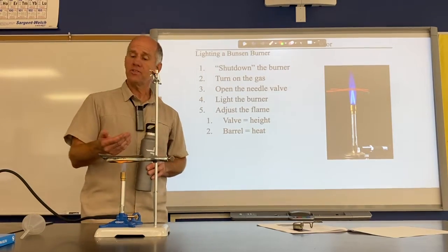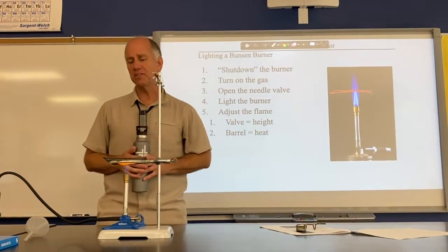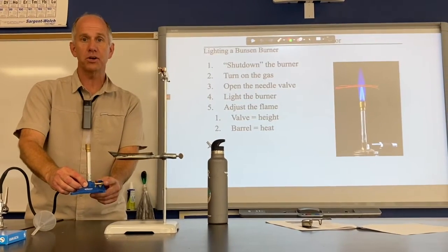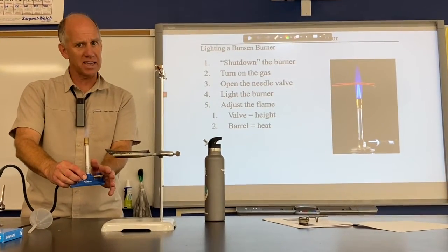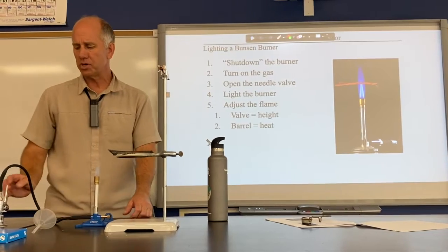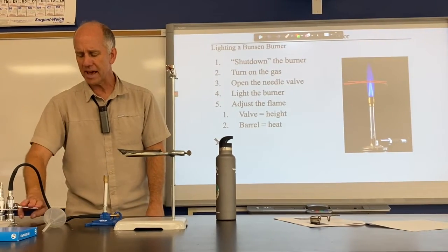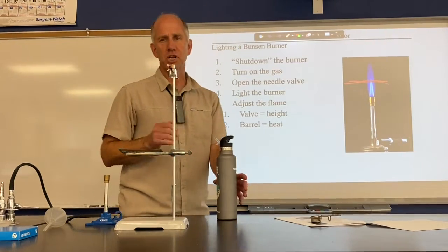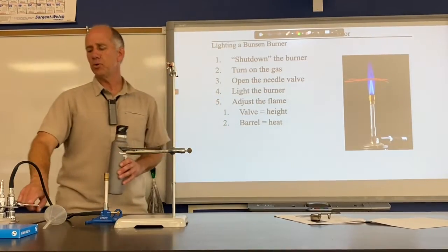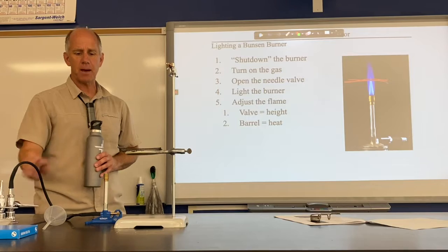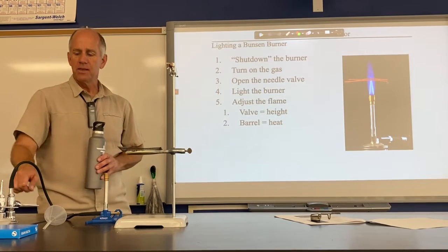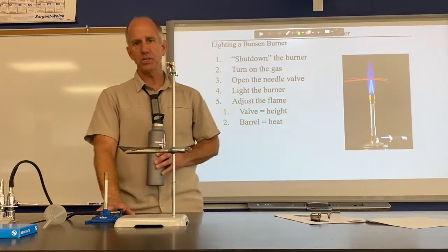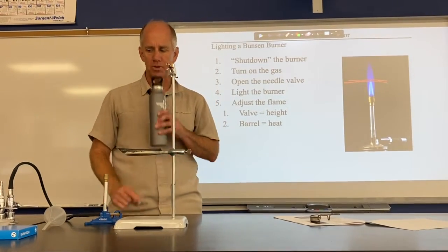When you're done, shut the burner down. Do not shut it down at the needle valve — these are not gas-tight and they leak. Shut it down at the tap. Please notice we never use the gas tap to adjust the height of the flame; it's either off or wide open, and all adjustments happen at the Bunsen burner.